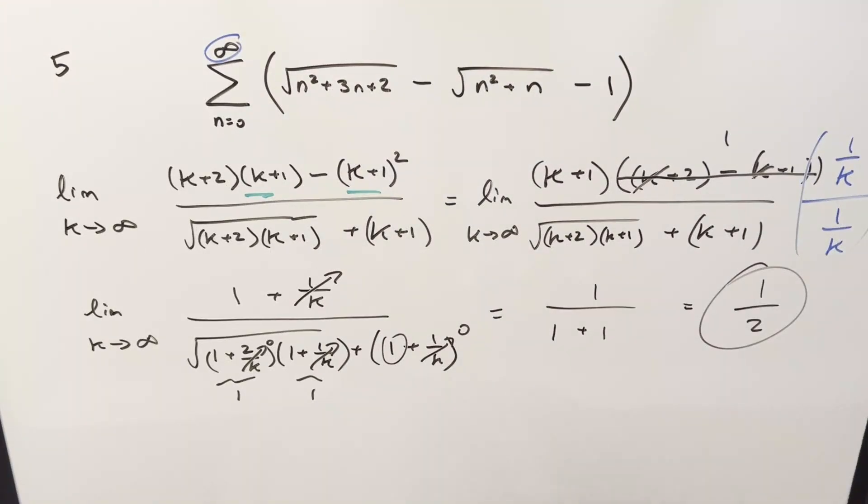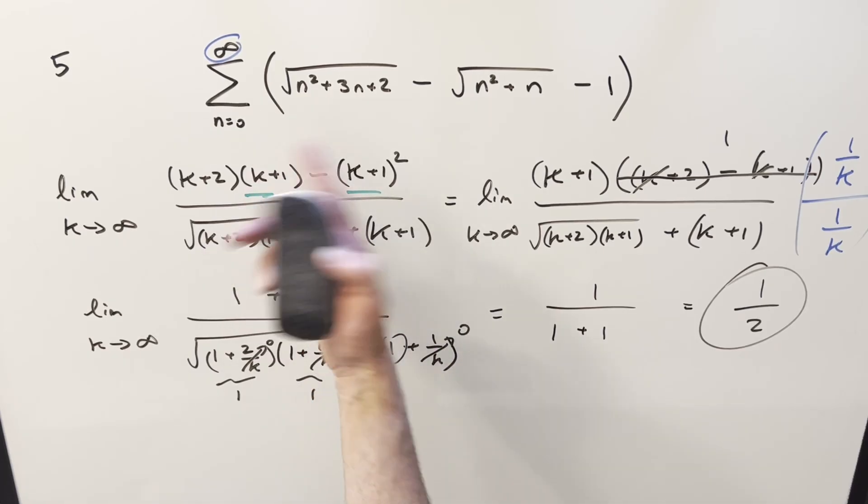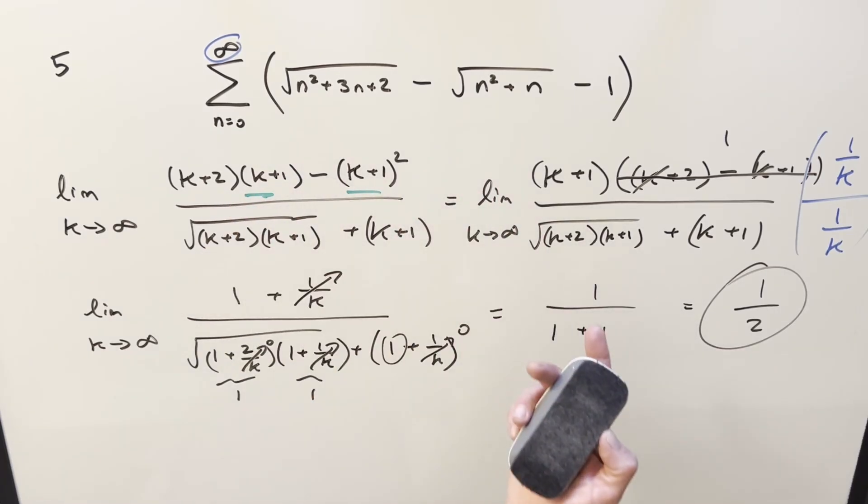Interesting sum. I probably should have mentioned at some point, when we did that cancellation about five minutes ago, that just shows you that it's telescoping. So the other way you could do it is writing out terms. You kind of write out terms, you get the same cancellation of a whole bunch of stuff. Doing it this way, we're just able to do it all in one step without writing out the terms.